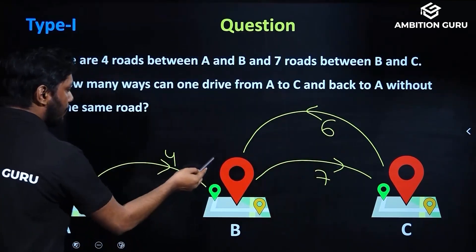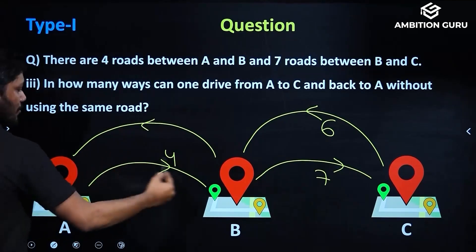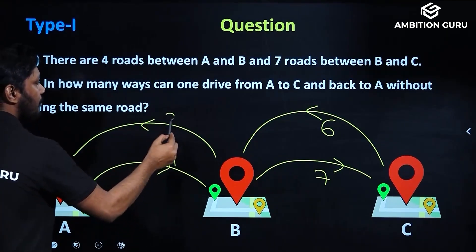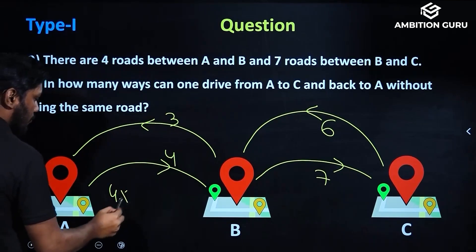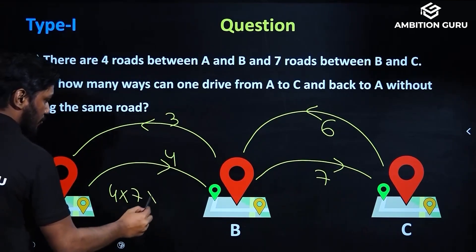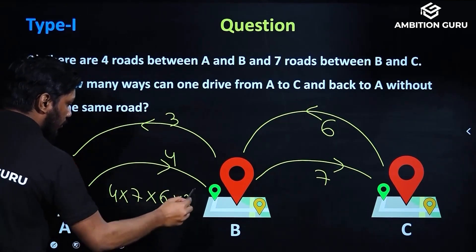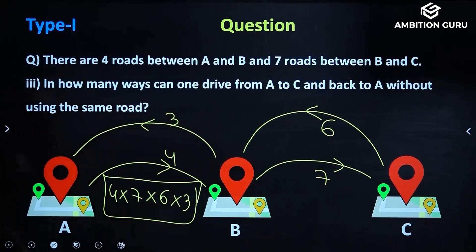Then again B to A — one road was already used going up, so only 3 ways remain. So what is the answer? 4 into 7 into 6 into 3. This is the answer.